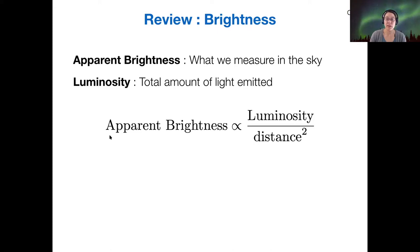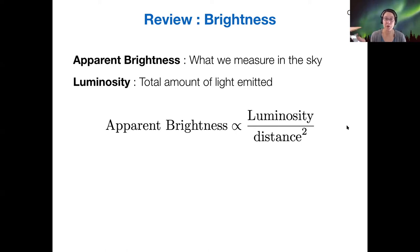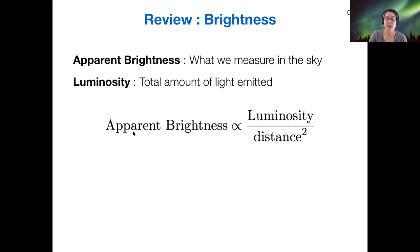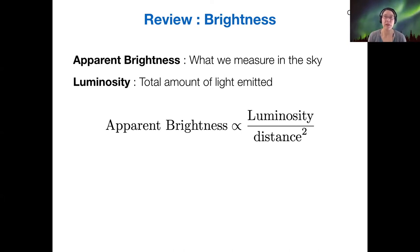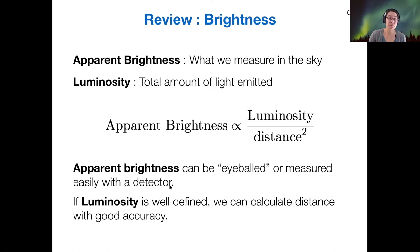Apparent brightness is proportional to the luminosity divided by the distance squared. We've used this equation reformulated in a different way using apparent and absolute magnitude — those were little m and big M. This equation can be used in different ways depending on how you're measuring brightness and luminosity: whether in an intensity scale, which is more physically relevant, or in the magnitude scale, which is easier to eyeball.